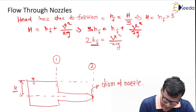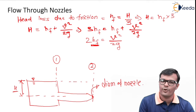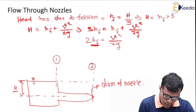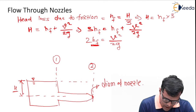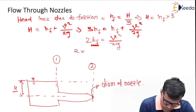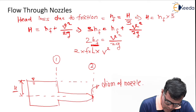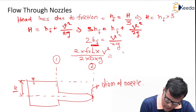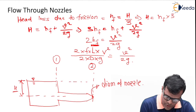The head loss due to friction in the pipe can be calculated using the Darcy-Weisbach formula. Substituting, we get: 2 × f × L × V² divided by 2 × D × g, which equals v² upon 2g, where capital V is the pipe velocity and small v is the nozzle velocity.